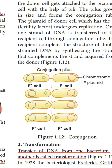In figure 1.12 on conjugation, you can see the F+ cell (donor cell) and the F- cell (recipient cell). The F+ or donor cell has a plasmid carrying the fertility factor. In the bacterial cell, apart from the circular chromosome at the center, there is extra chromosomal DNA called the plasmid, and the plasmid carries the fertility factor. The F- cell does not have the plasmid.